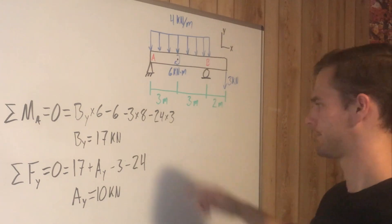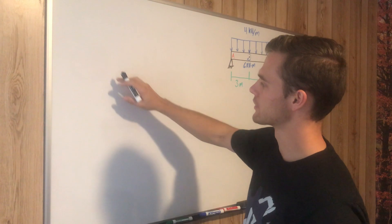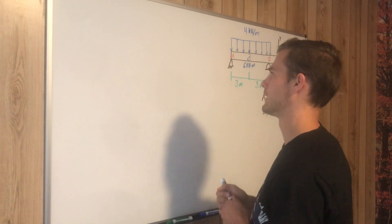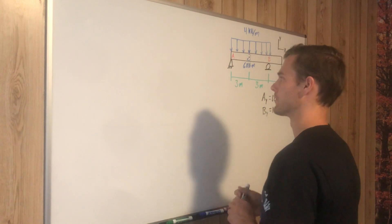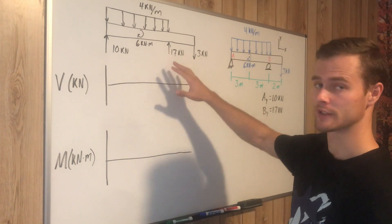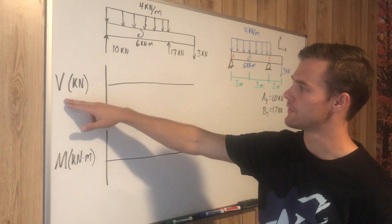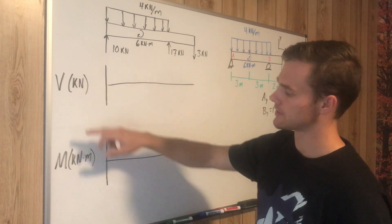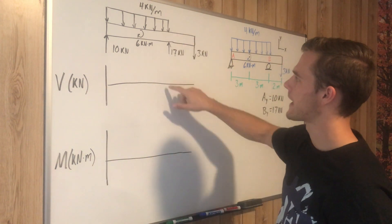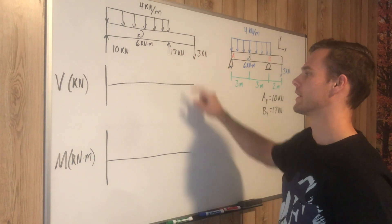I'm going to draw our free body diagram so that we can draw our shear and moment diagrams below it. That will help us line them up and keep track of everything. Here we have our free body diagram with all forces and moments, and below it our shear diagram labeled V and moment diagram labeled M, lined up so we can track what is changing with our loading on the beam.